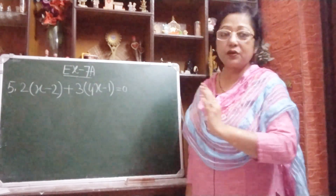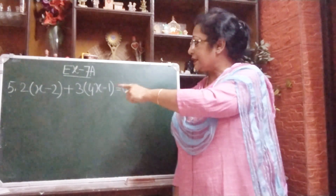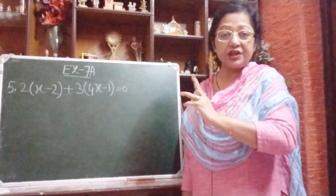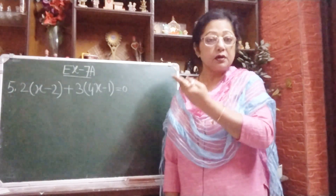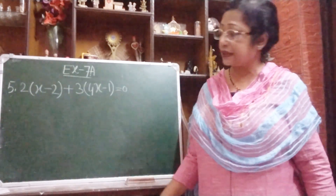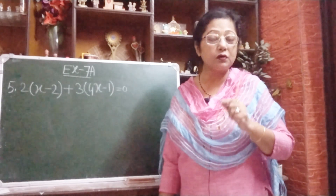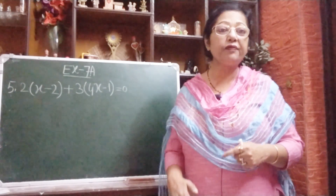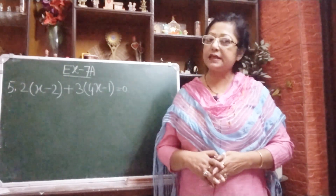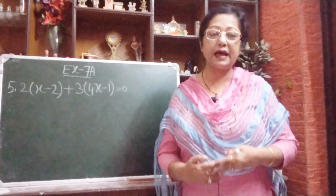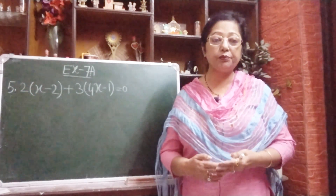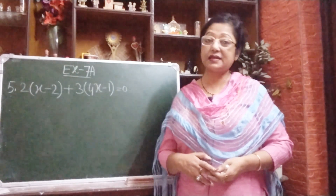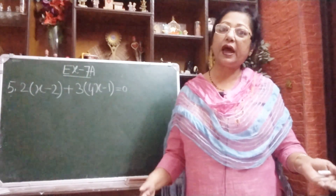First you should understand what you have to do. The equation has an equals sign, and the right hand side has a 0. A linear equation has 2 sides — left hand side and right hand side. We have to solve it, meaning we have to find out the value of x. Then we will do the checking. Checking means we will put the value of x — that is called the substitution method — and we will see if the left hand side equals the right hand side.